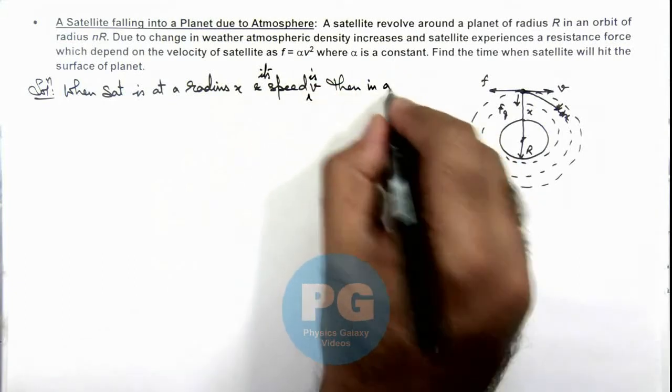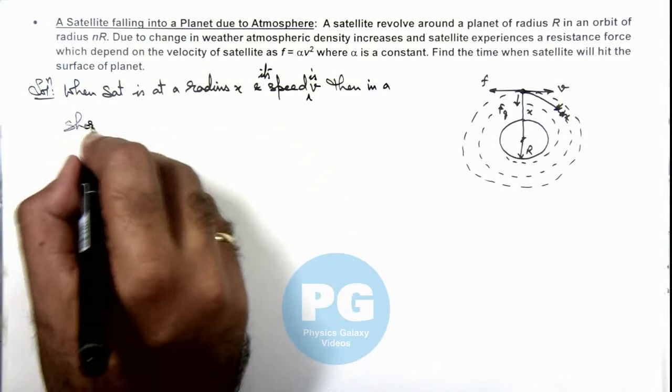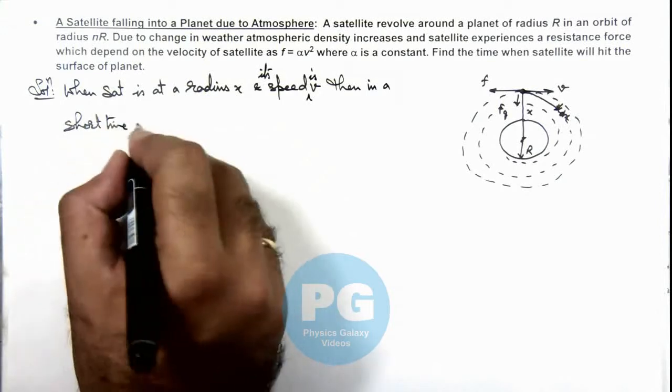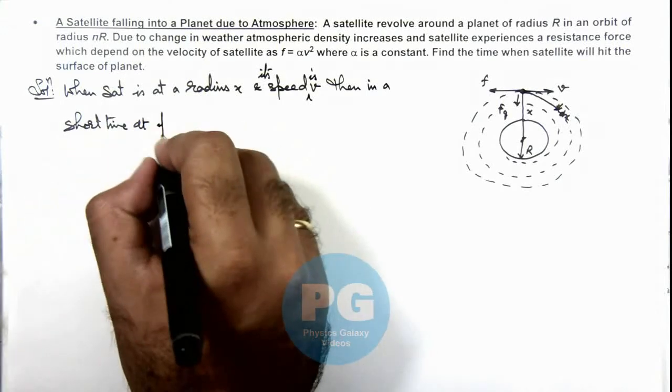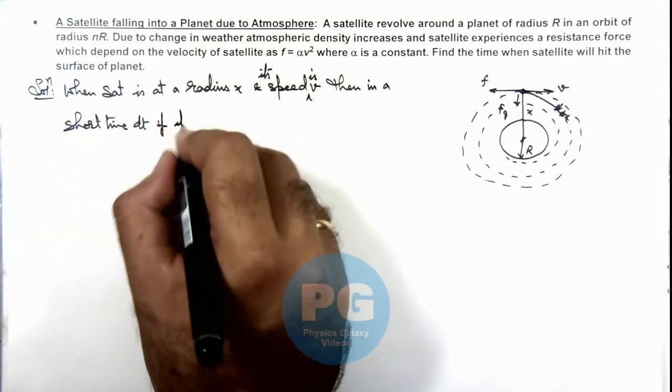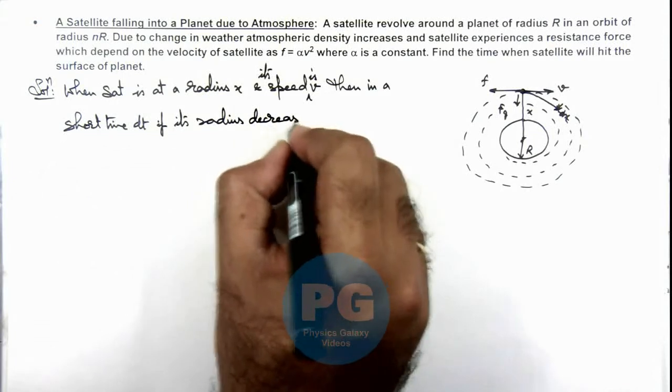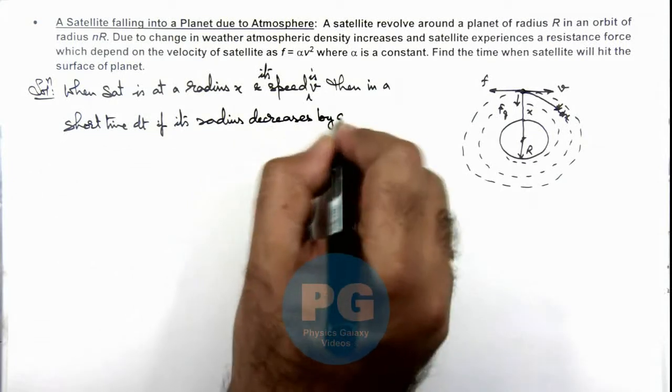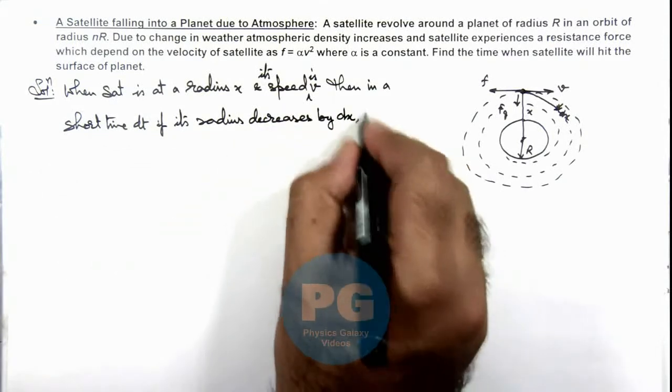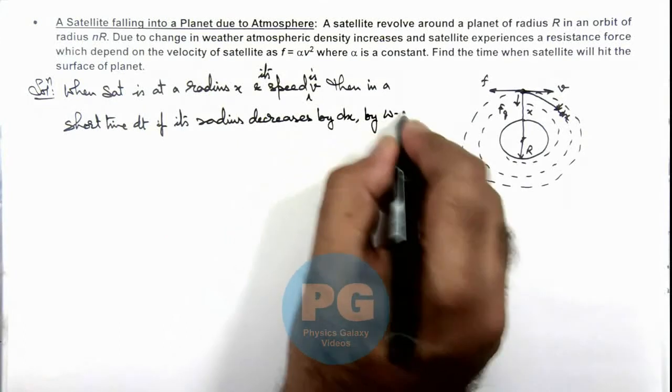By work energy theorem, we use, say if its initial kinetic energy is Ki, then if its radius decreases by dx.